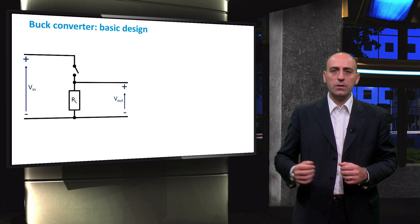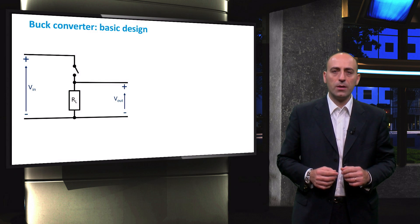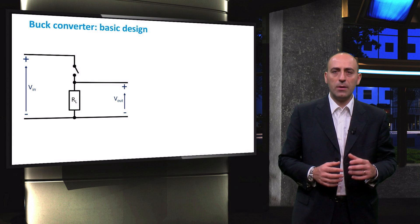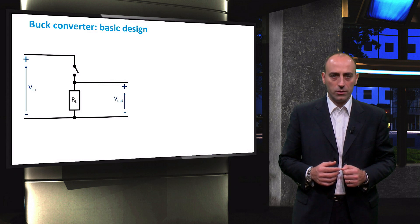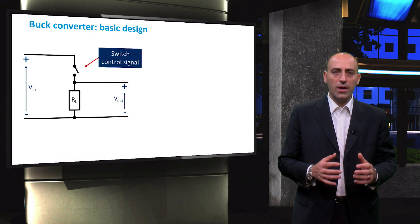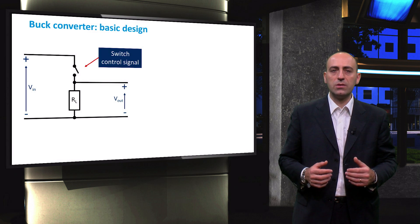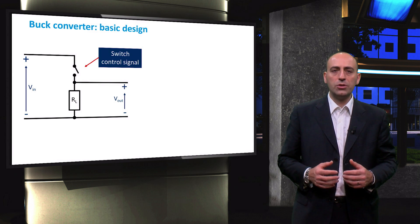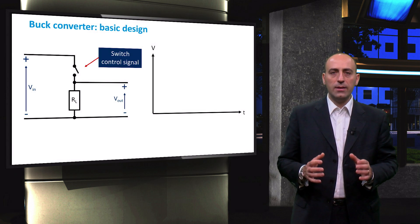The simplest version of a buck converter is depicted here. Starting from the left, we have the power supply — for example, a PV generator — that applies the voltage at the input terminal of the converter. Then we have the switch control signal, for example a transistor, and the resistive load RL, which receives the output voltage Vout.